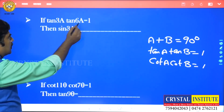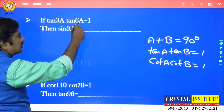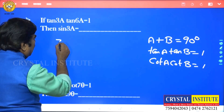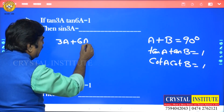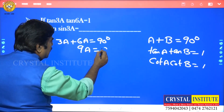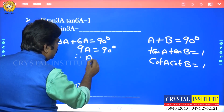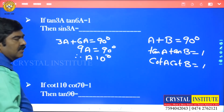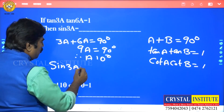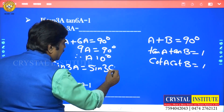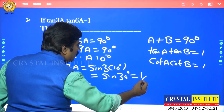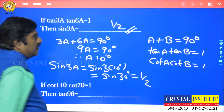Given tan3a · tan6a = 1, we apply the complementary angle rule. So 3a + 6a = 90°, which gives 9a = 90°, therefore a = 10°. Then sin3a = sin(3 × 10°) = sin30° = 1/2. The answer is 1/2.